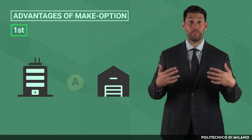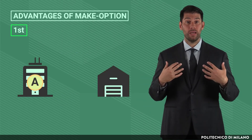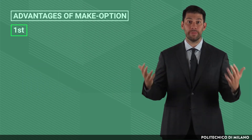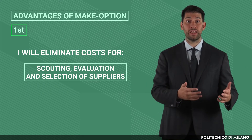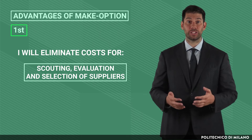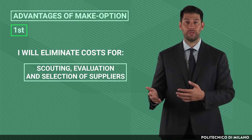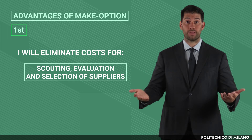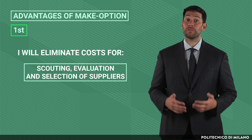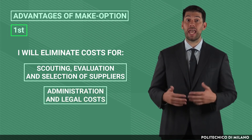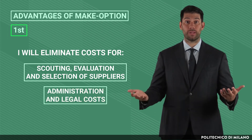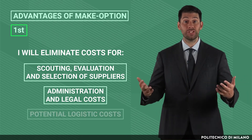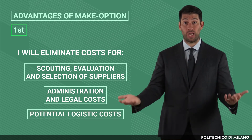If I can perform an activity within the company, I will not need a supplier and I will eliminate costs for scouting, evaluation and selection of suppliers — for example, the vendor rating process — as well as administration and legal costs, like the cost to draft the contract, and potential logistic costs.